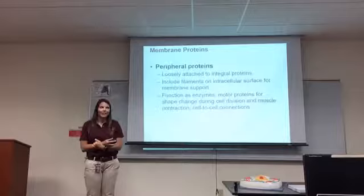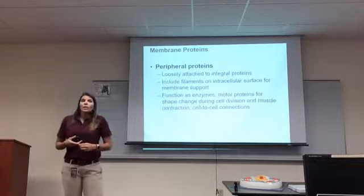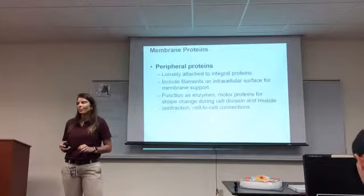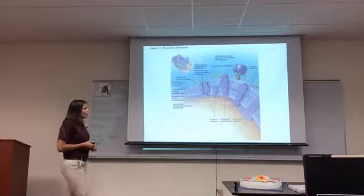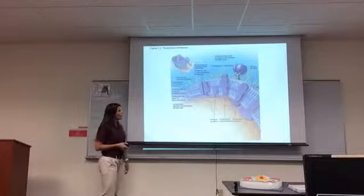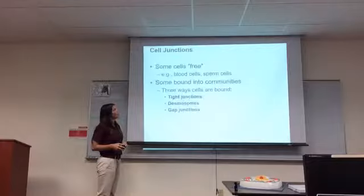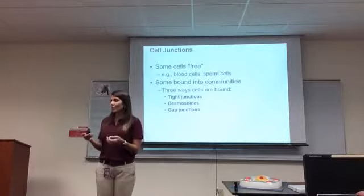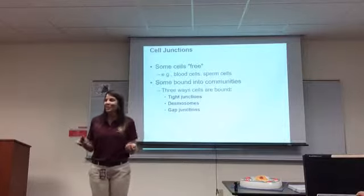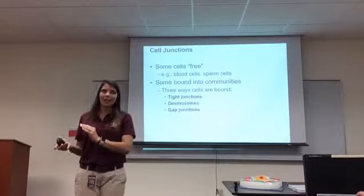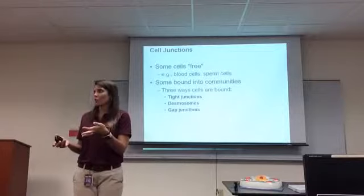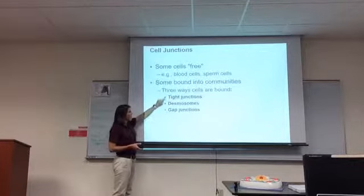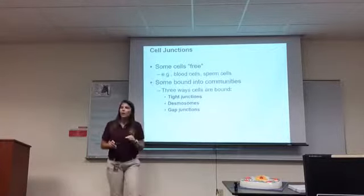Cell junctions: you're a bag of cells, but you're clearly organized. What holds your cells together are what we call cellular junctions. There are three types of cell junctions: tight junctions, desmosomes, and gap junctions. If it's a tight junction — it's tight, so things don't get through easily. And gap junctions — there's space in between them, so things can get through. Never underestimate the use of your common sense.